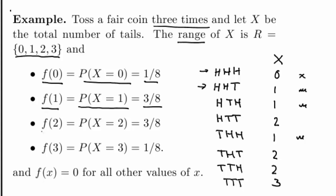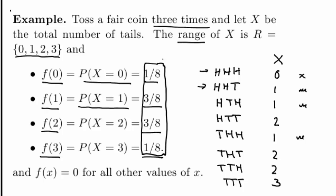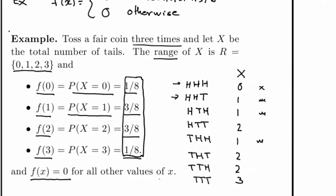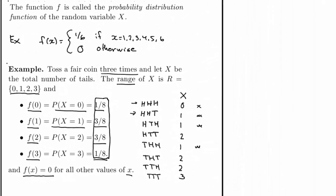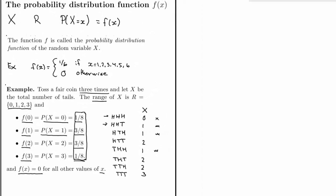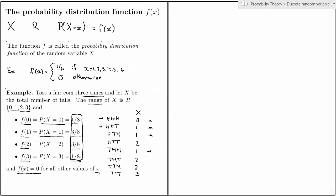In the same way, we get that f of 2 is 3 over 8, and f of 3 is 1 over 8. Sum all these numbers and you get 1, as you're supposed to. We can also add that f of x is equal to 0 for all other values of x, though it's quite common to skip this last sentence as it's implicitly understood.